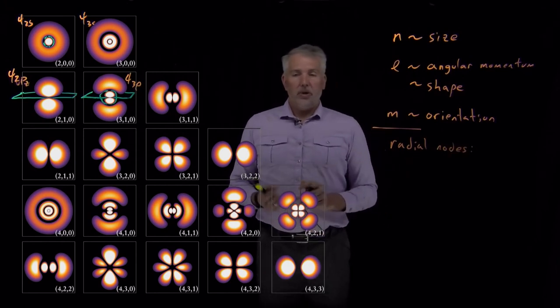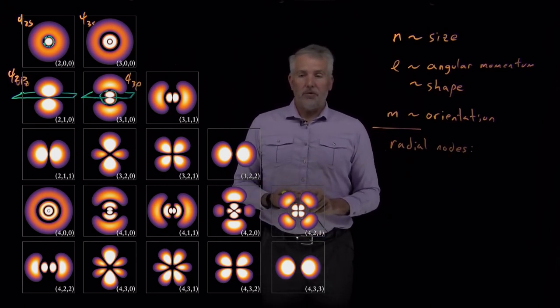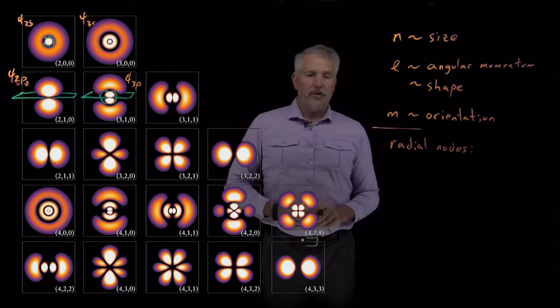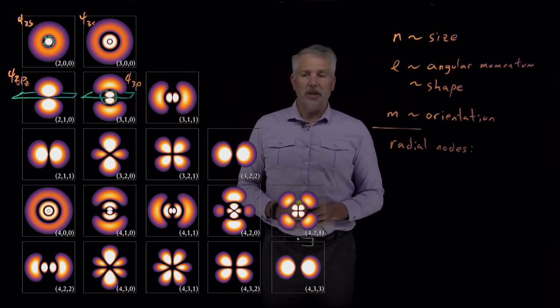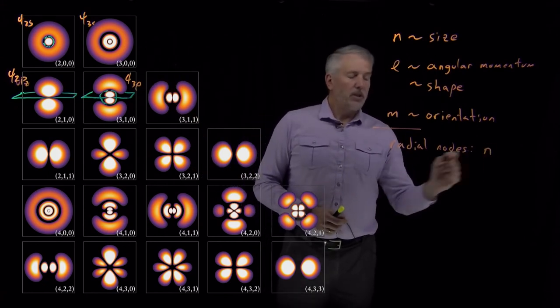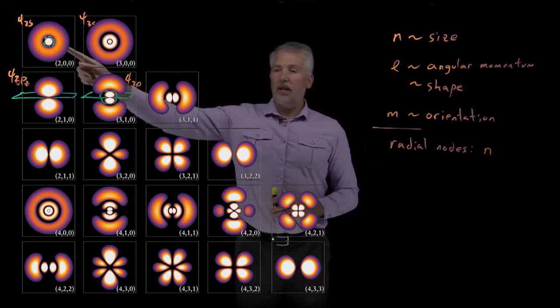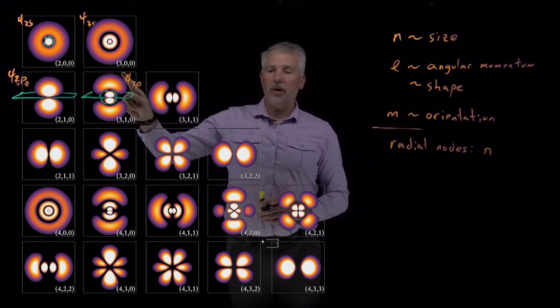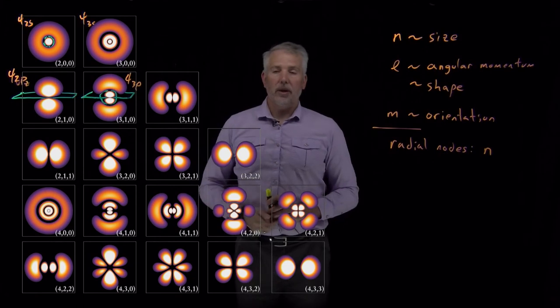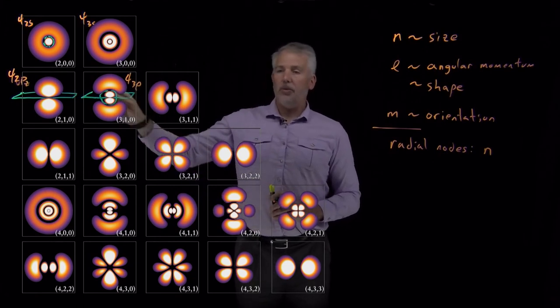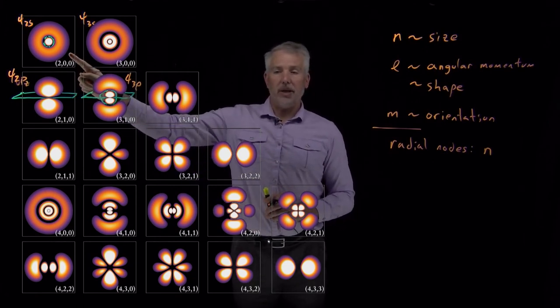And we can use either the mathematical equations for the wave functions or this chart as a reference and convince ourselves relatively easily that the number of radial nodes has something to do with n. As we go from n equals 2 to n equals 3, we always introduce one extra radial node. But it's not guaranteed that we'll have one radial node every time n equals 2.